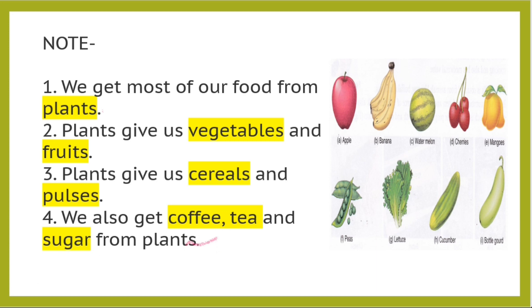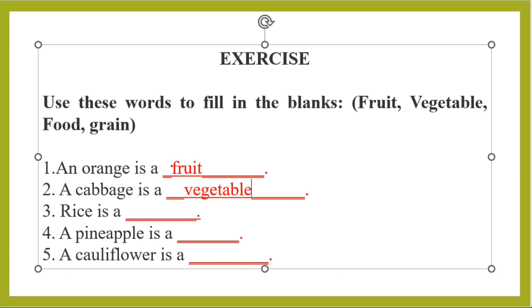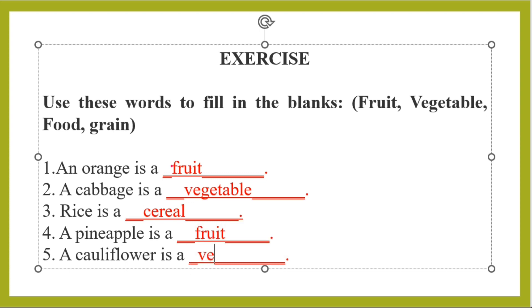Plants are very useful in our daily life. Now let us do an exercise — fill in the blanks. An orange is a fruit. A cabbage is a vegetable. Rice is a cereal — you can also write grain. A pineapple is a fruit. And a cauliflower is a vegetable.